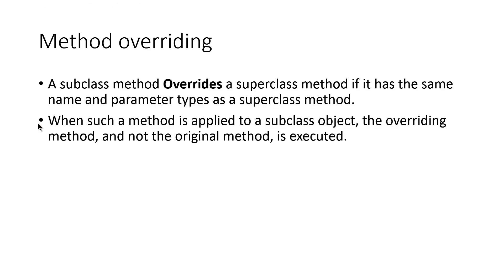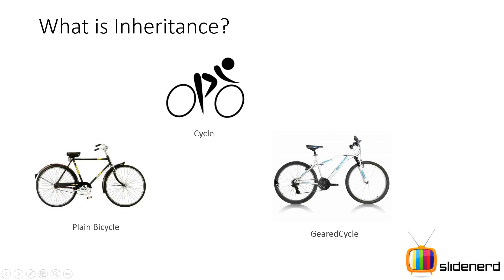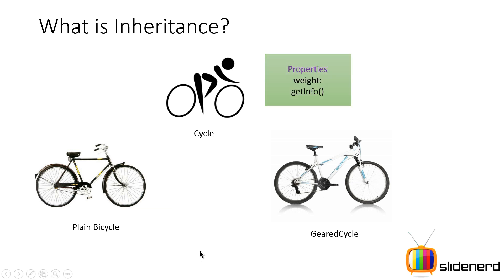So first, let's talk about Method Overriding. A subclass method overrides a superclass method if it has the same name and same parameter list. Let's understand what this means with a simple example. I have a class called Cycle, which is a general class. There's a plain bicycle which is a type of cycle, and there's a geared bicycle which is another type of cycle.